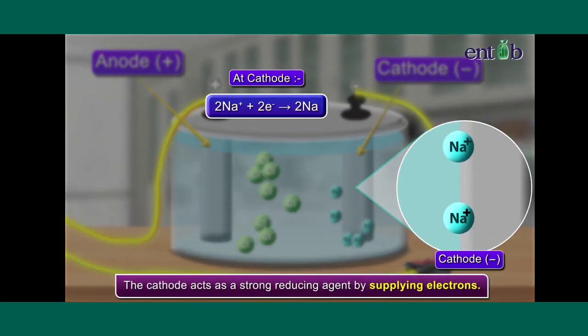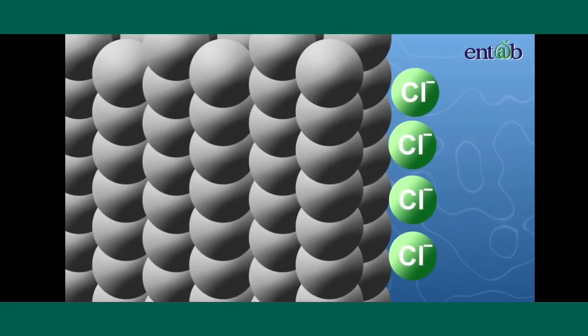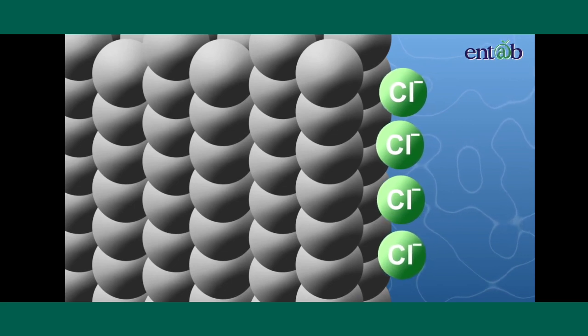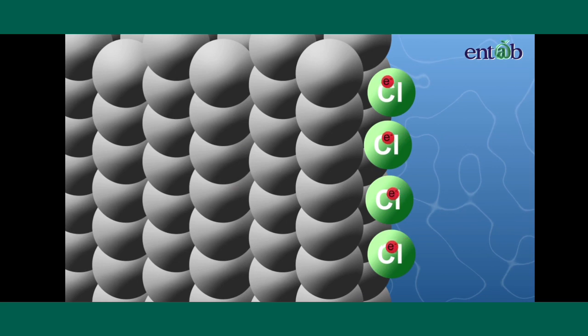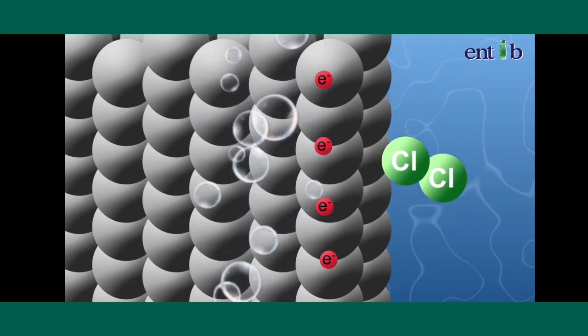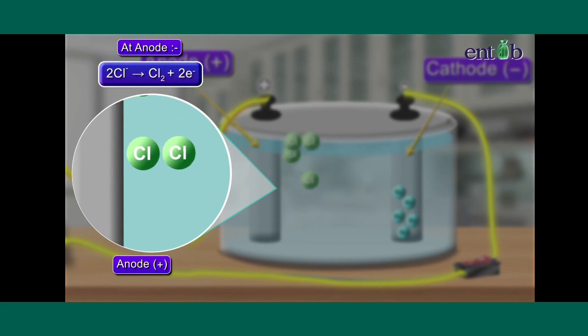The cathode acts as a strong reducing agent by supplying electrons. The negative chloride ions move towards the anode, that is the positive electrode in the molten salt, and give away their electrons to the positive electrode. Here, the chloride ions get oxidized to chlorine gas. The reaction can be written as shown.